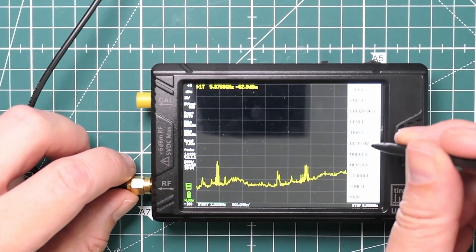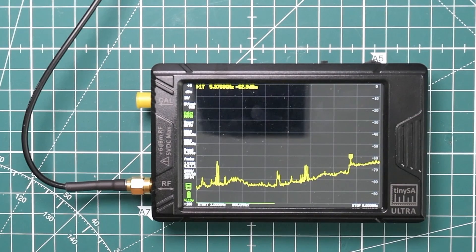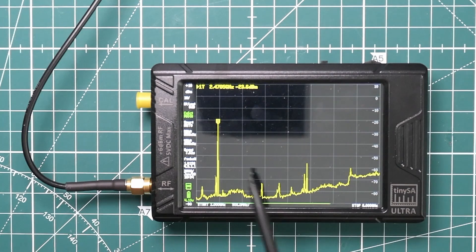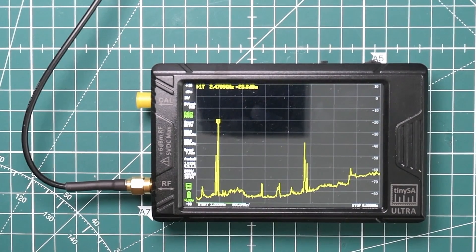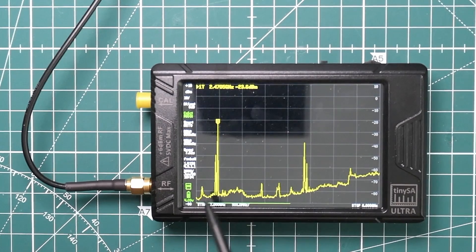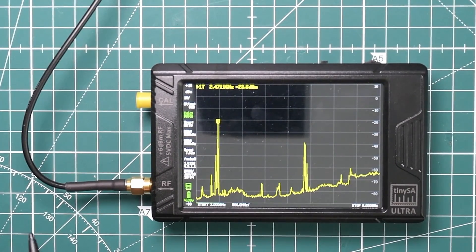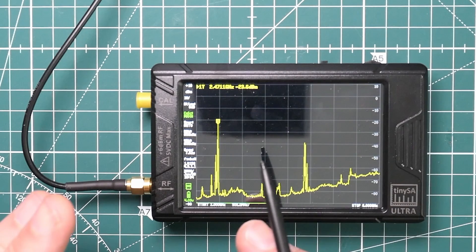So it's now connected to that antenna, max hold on. So we basically keep a record of the highest peaks. So it's no surprise that this peak here is the biggest because this is the 2.4 gigahertz Wi-Fi in my house. It's pretty high, minus 23 dBm. This is not a very controlled experiment, I should say.